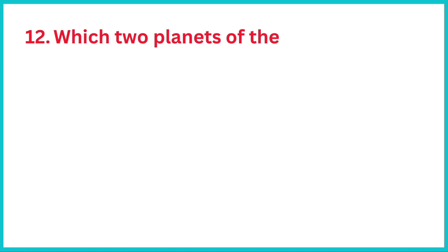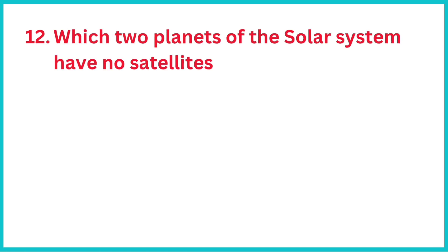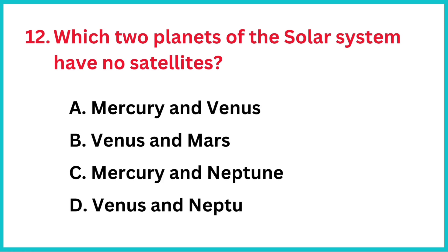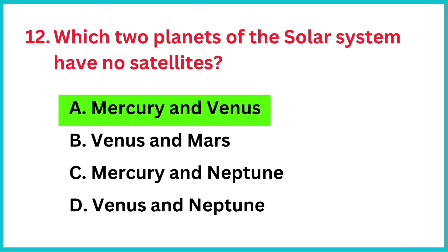Which two planets of the solar system have no satellites? The correct answer is option A: Mercury and Venus.